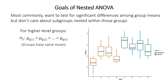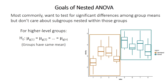The exact goals of nested ANOVA depend on the sampling structure and the scientific questions asked. Most often we want to test for significant differences among higher-level groups, but don't necessarily care about the subgroups nested within them. In a simple example with farmland versus forest as the two main groups, we might care whether water clarity differs significantly between farmland and forest regions, but not about differences among individual lakes. The null hypothesis for the higher-level groups is that they have the same mean value.